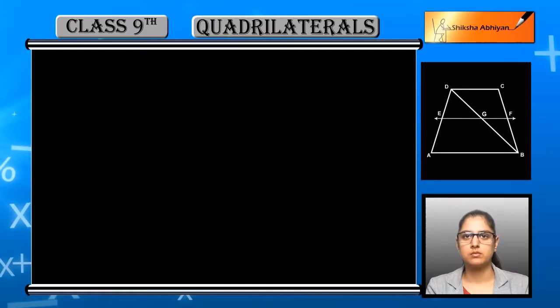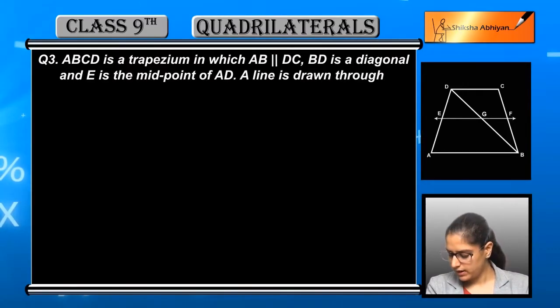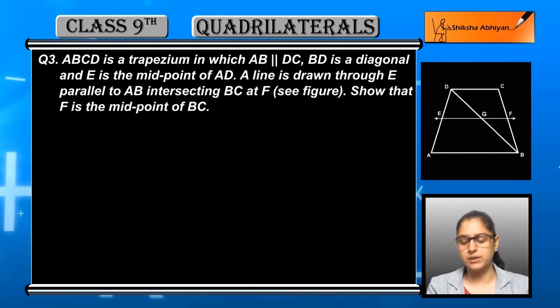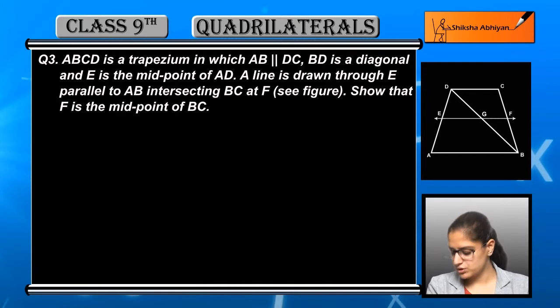Question number three: ABCD is a trapezium in which AB is parallel to DC, BD is a diagonal, and E is the midpoint of AD. A line is drawn through E which is parallel to AB, intersecting BC at F.